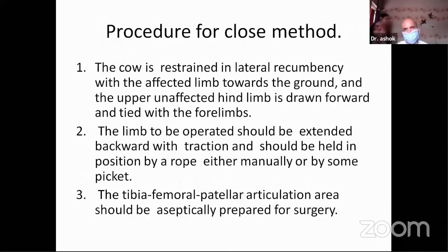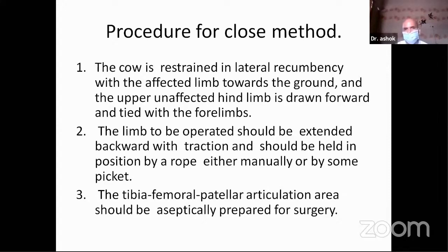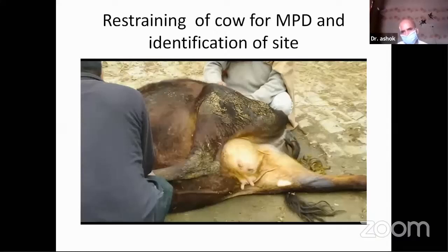For the closed method procedure, the animal is restrained in lateral recumbency with the affected limb towards the ground and the upper unaffected limb drawn forward and tied with the forelimbs. The limb to be operated should be extended backward with traction and held in position by a rope, either manually or by a picket. The femoropatellar articulation area should be aseptically prepared for surgery. In this picture, you can notice the affected limb is on the ground side and the unaffected limb is tied with the forelimbs.